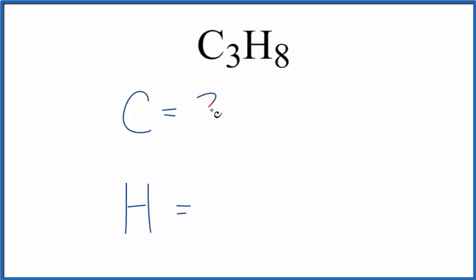So for carbon, the subscript of three means we have three carbon atoms. And then for hydrogen we have eight hydrogen atoms. If you were asked the total number of atoms in this propane, it'd be 8 plus 3, you'd have 11 total atoms.